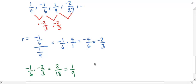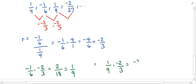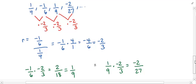We need to check one more time — it has to hold for everything. Going from 1/9 to negative 2/27: if I take 1/9 and multiply by the common ratio negative 2/3, multiplying across top and bottom gives negative 2/27, which is exactly the fourth term. To go from one term to the next, we multiply by negative 2/3. That makes this geometric with a common ratio of negative 2/3.